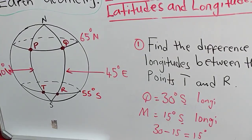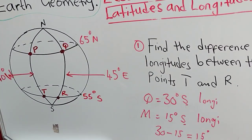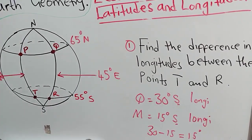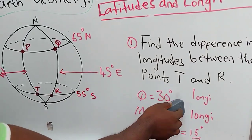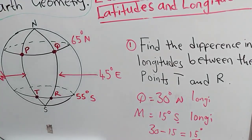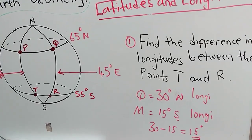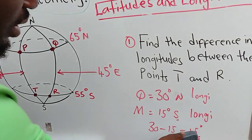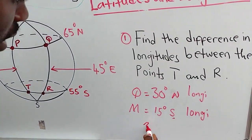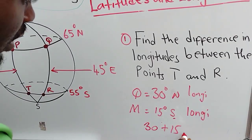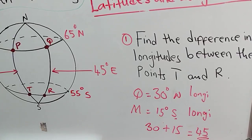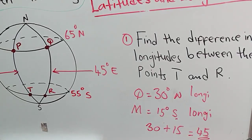Now let's look at another scenario where the longitudes are not lying on the same side of the Greenwich meridian, but on different sides. What are you supposed to do? In that case, you are supposed to add. So if instead of south it's lying on north, you add: 30 plus 15, giving you 45. So this is the difference in longitudes when they are lying on different parts of the Greenwich meridian. I hope this point is clear.